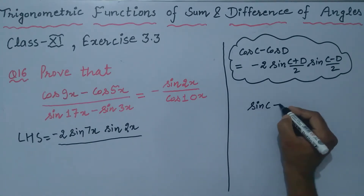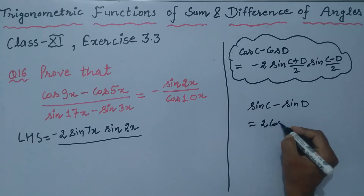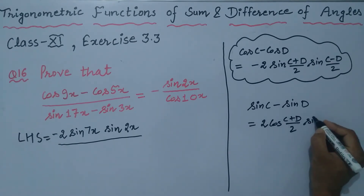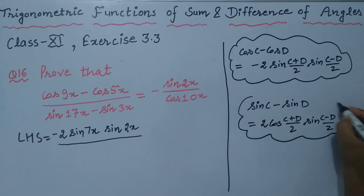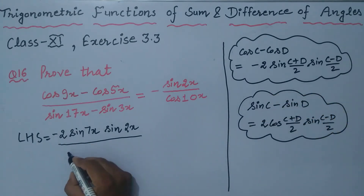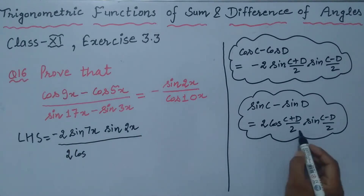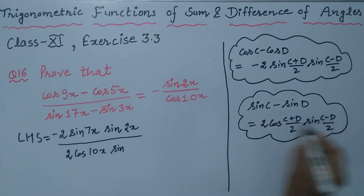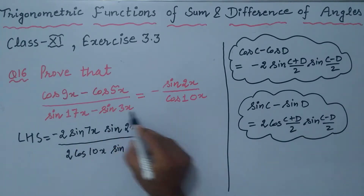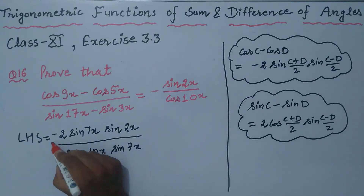For the denominator, sin C minus sin D equals 2 cos (C+D)/2 into sin (C-D)/2. So we apply this rule: 2 cos (17+3)/2 = 10x, into sin (17-3)/2 = 7x.